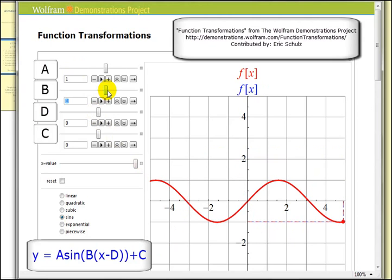Okay, now let's take a look at what happens when we change the value of B. Remember, the period is two pi divided by B. So as we increase B, you can see we have a change in the period, or you could also think of it as a horizontal compression.